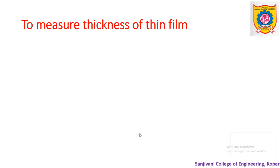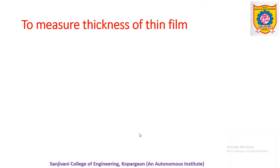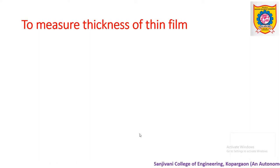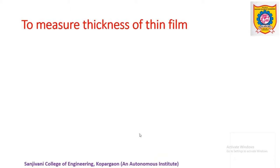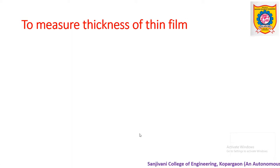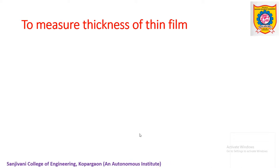Now let us see how the interferometry concept helps to measure thickness of thin films. In the previous video, we discussed one application of interference: anti-reflecting thin film coatings. The thickness of these thin films is of the order of λ/4μ, where λ is approximately 5500 angstroms, that is 5500 × 10⁻¹⁰ meters. That means the value of t is practically very very small. The question is: how can we determine the thickness of such thin films?